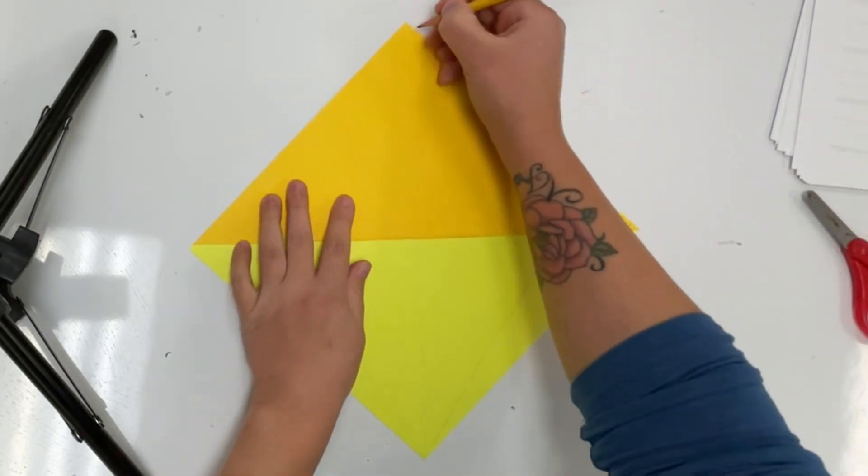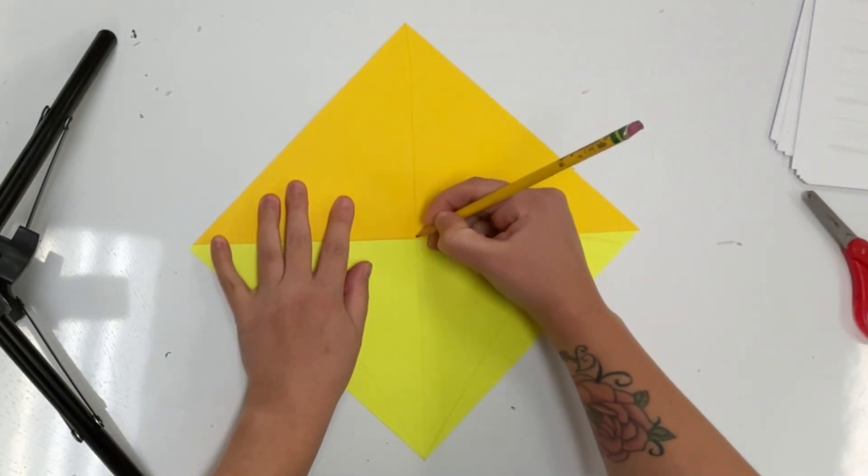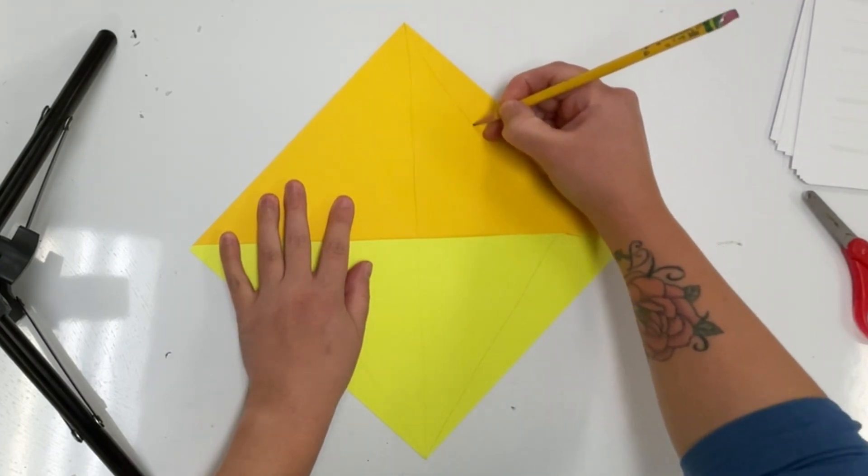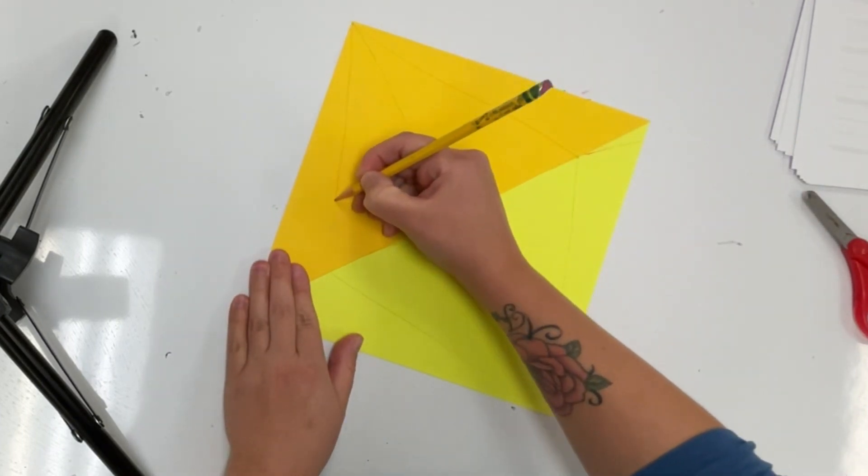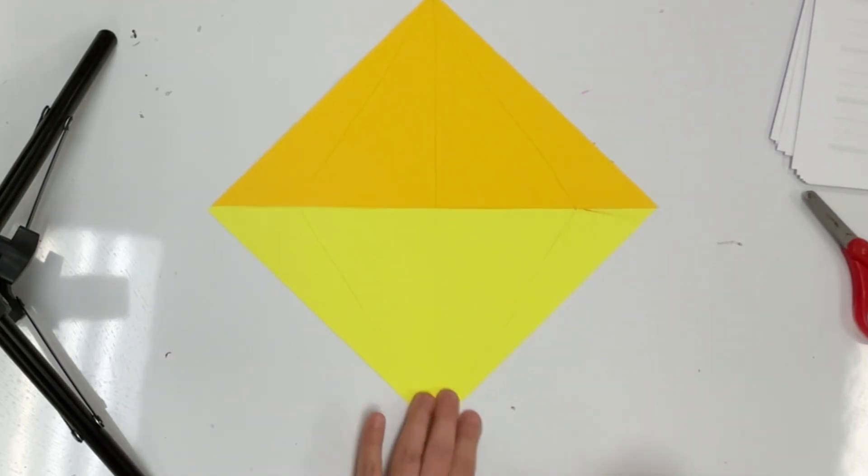Then I'm rotating my diamond and doing the same kinds of lines from the top corner down to that horizontal center line. They're matching up with the ones on the other side.